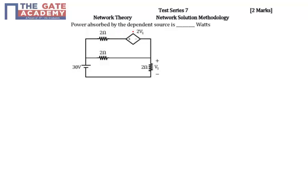Then the power absorbed is nothing but the voltage multiplied with its current. If you see here, this is a point of 30 volts and this is v1, means this is a point of v1 volts.